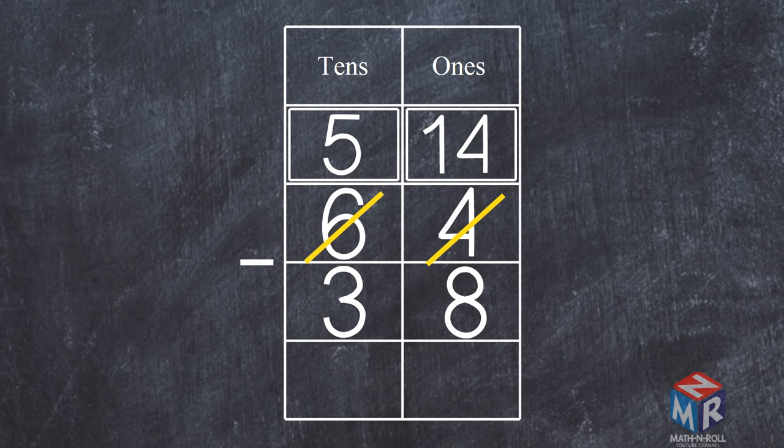14 minus 8 is equal to 6 ones, and 5 minus 3 is equal to 2. So 64 minus 38 is equal to 26.